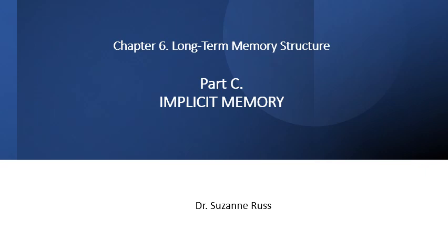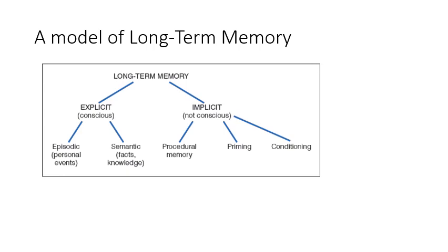This is the third part of our content on long-term memory structure, and this is on implicit memory. We contextualized long-term memory with short-term memory in the last lecture. Long-term memory we think of as explicit — broken into episodic things, personal events, and semantic things, facts and knowledge. Now we'll talk about implicit memory: our memory functions that are not conscious and not effortful. We'll talk specifically about procedural memory, priming, and conditioning.